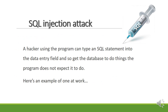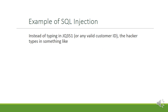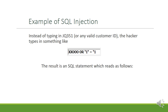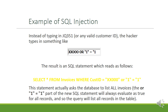A hacker who knows what the SQL statement looks like might enter data into the entry field to get the database to do things the program did not expect. Instead of typing a valid customer ID like JQ351, the hacker types something like XX000' OR '1'='1. The resulting SQL statement reads: SELECT * FROM invoices WHERE cust_id = 'XX000' OR '1'='1'. The OR '1'='1' part always evaluates as true for all records, so the query lists all records in the table.